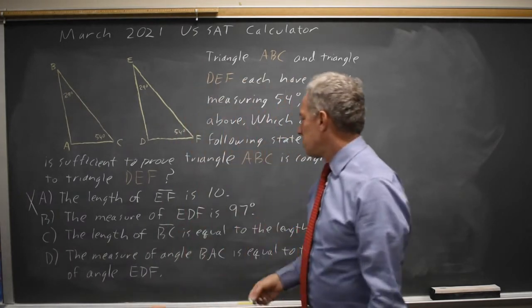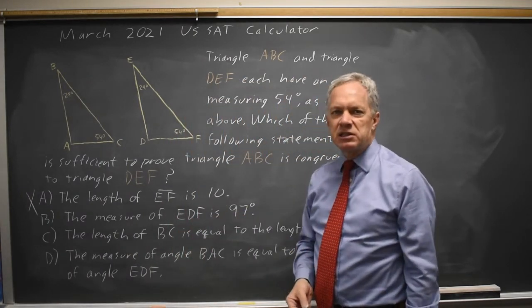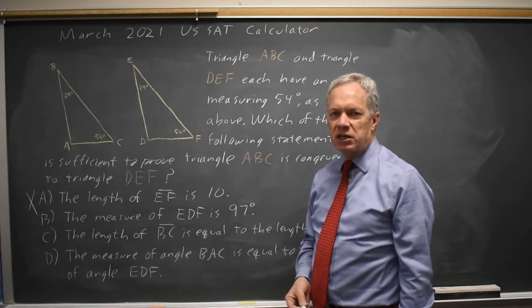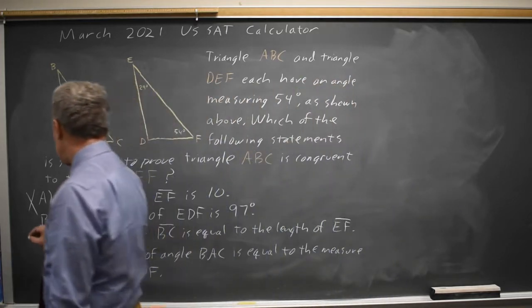Choice B, the measure of angle EDF is 97 degrees. That does not add any information. We already knew that because the angles of a triangle add up to 180. So that will not prove congruence.